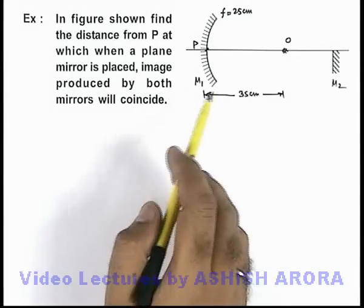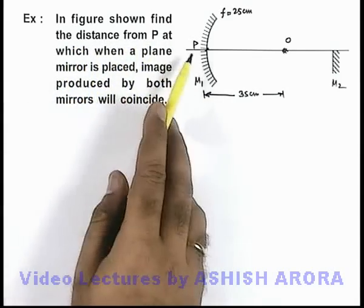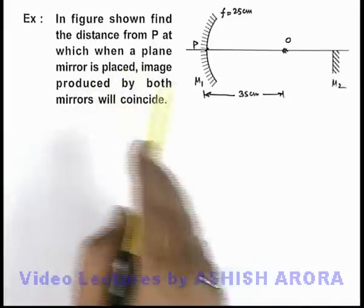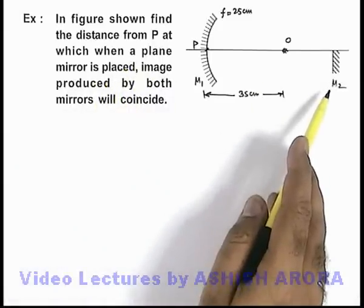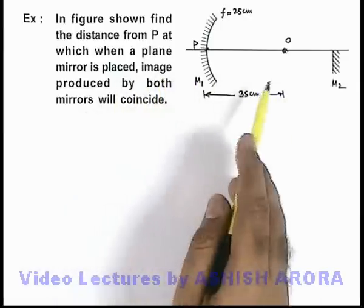In this example, it is given that in the figure shown, we are required to find the distance from point P at which when a plane mirror is placed—here M2 mirror is placed—image produced by both mirrors will coincide.